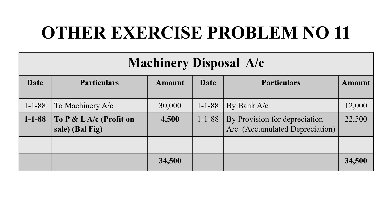On the credit side, by provision for depreciation, that is $22,500. So the total on both sides — $10,000 — we will get a debit balance of $4,500. That is profit on sale, which is the balancing figure. The grand total on both sides is $34,500.